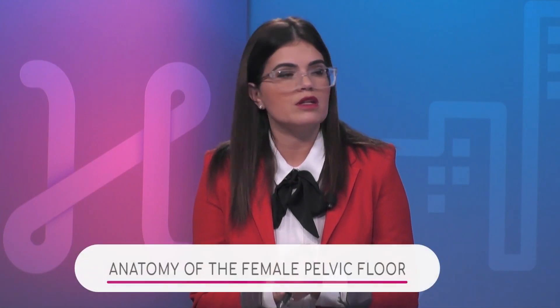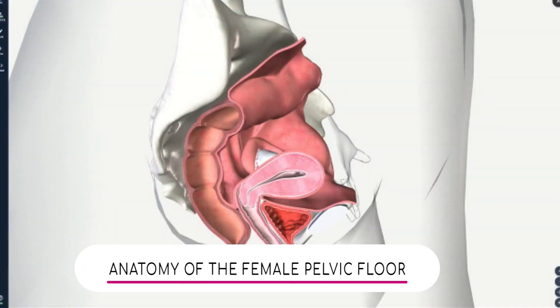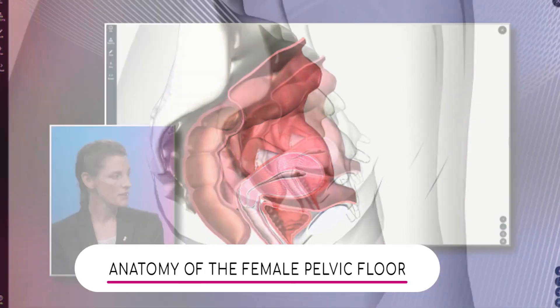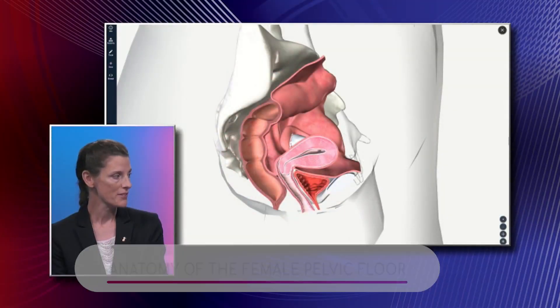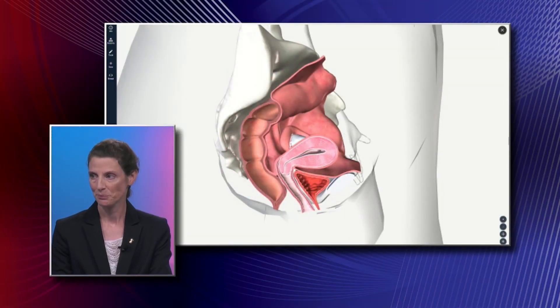So what are we looking at in our 3D image here? This is a picture of the woman's pelvis — it's a cross-section which includes the bladder, the uterus, the vagina, the rectum, and the anal canal.